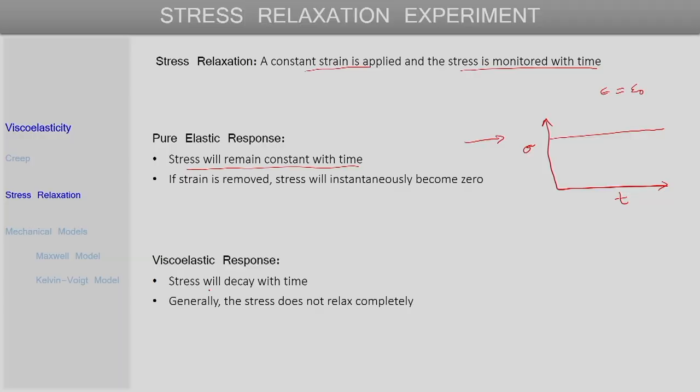If we now look at the response of a viscoelastic material, in that case what happens is that a constant strain is applied and the stress that develops in the material slowly decays to zero. Actually for a typical viscoelastic polymer it does not decay all the way to zero — some residual stress might still be present even after long times. So the stress need not relax completely and need not go all the way to zero even at long times.